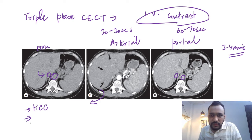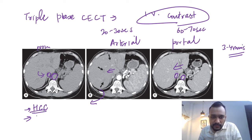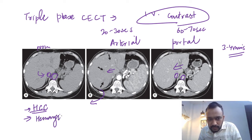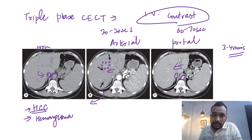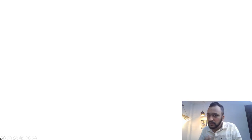The arterial phase is useful for lesions like hepatocellular carcinoma, which enhances in the arterial phase and shows washout in the portal venous phase. For hemangioma, it shows peripheral and nodular enhancement in the arterial phase, followed by progressive enhancement in the portal venous phases. We will look at these imaging appearances in videos three, four, and five.